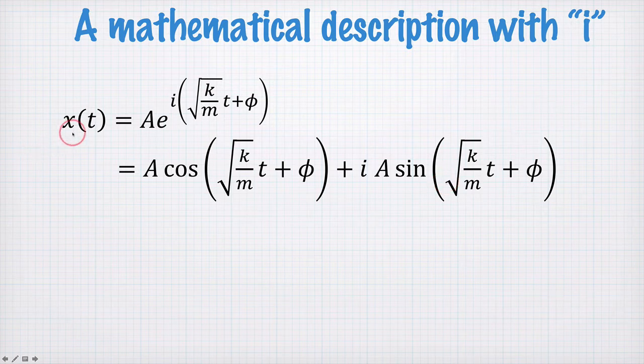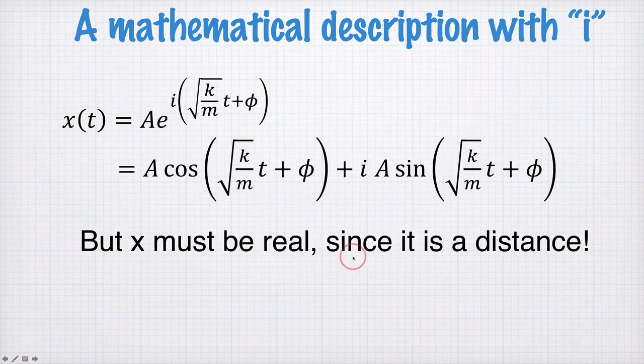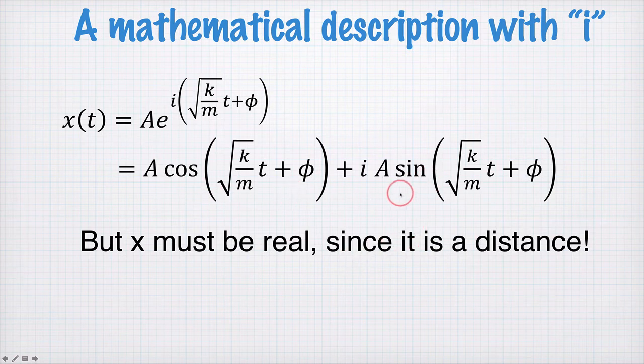But x is a distance, we think it should be real valued, not some sort of complex number. So there's some sort of strange thing going on here. x must be real because it's a distance, but here we have a function which is complex. What can we do about it?